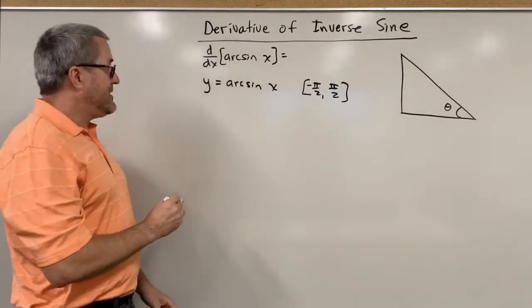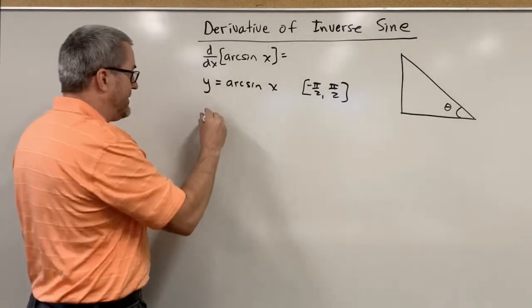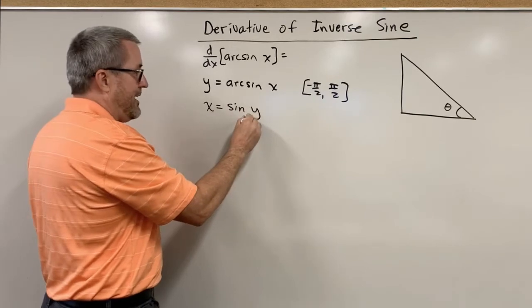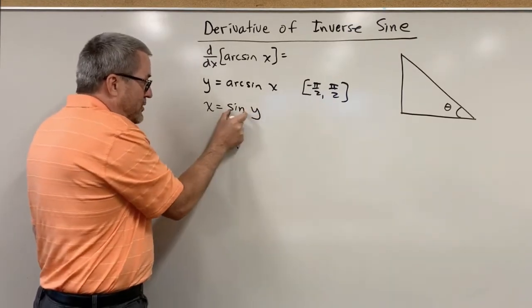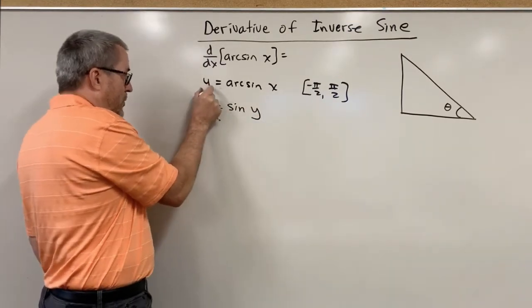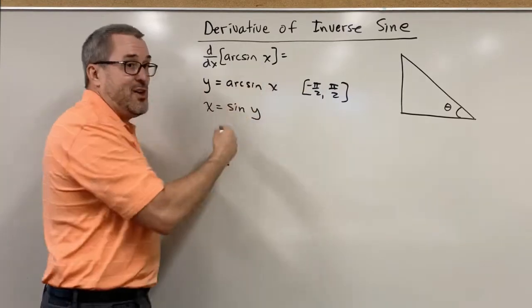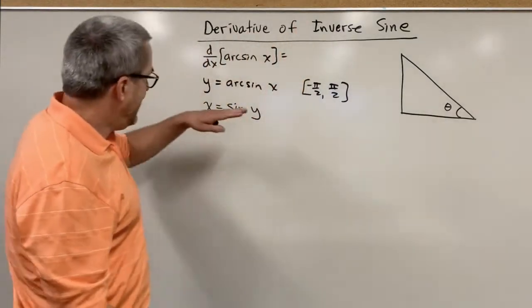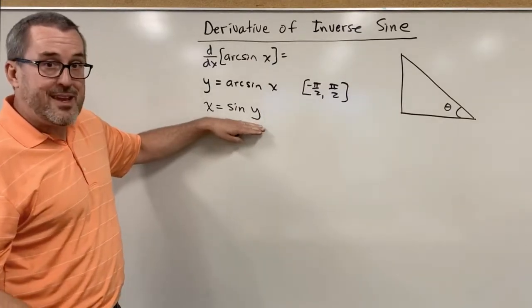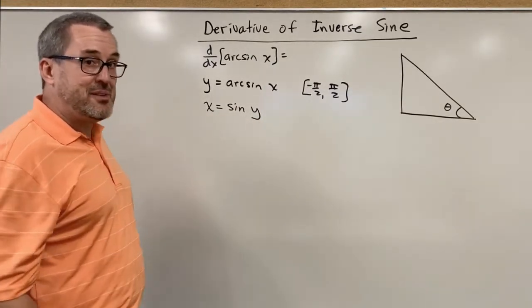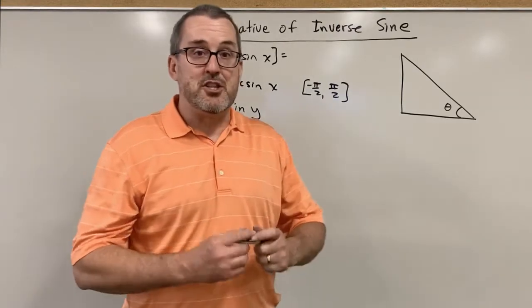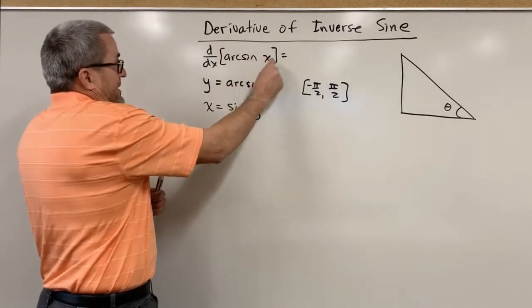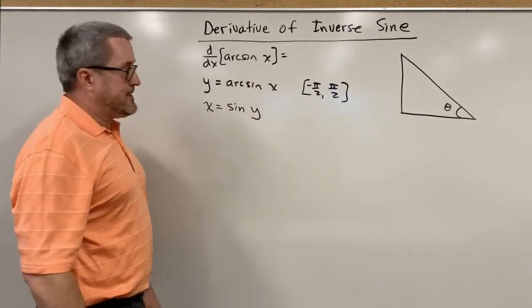Now if y equals the arc sine of x, then we can equivalently say x is equal to the sine of y. Y is the angle whose sine is x. These are just equivalent ways to say the same thing. Now in this format though, we can differentiate using our implicit differentiation. We're going to differentiate with respect to x, because that's what we ultimately are doing up here, is differentiating with respect to x.